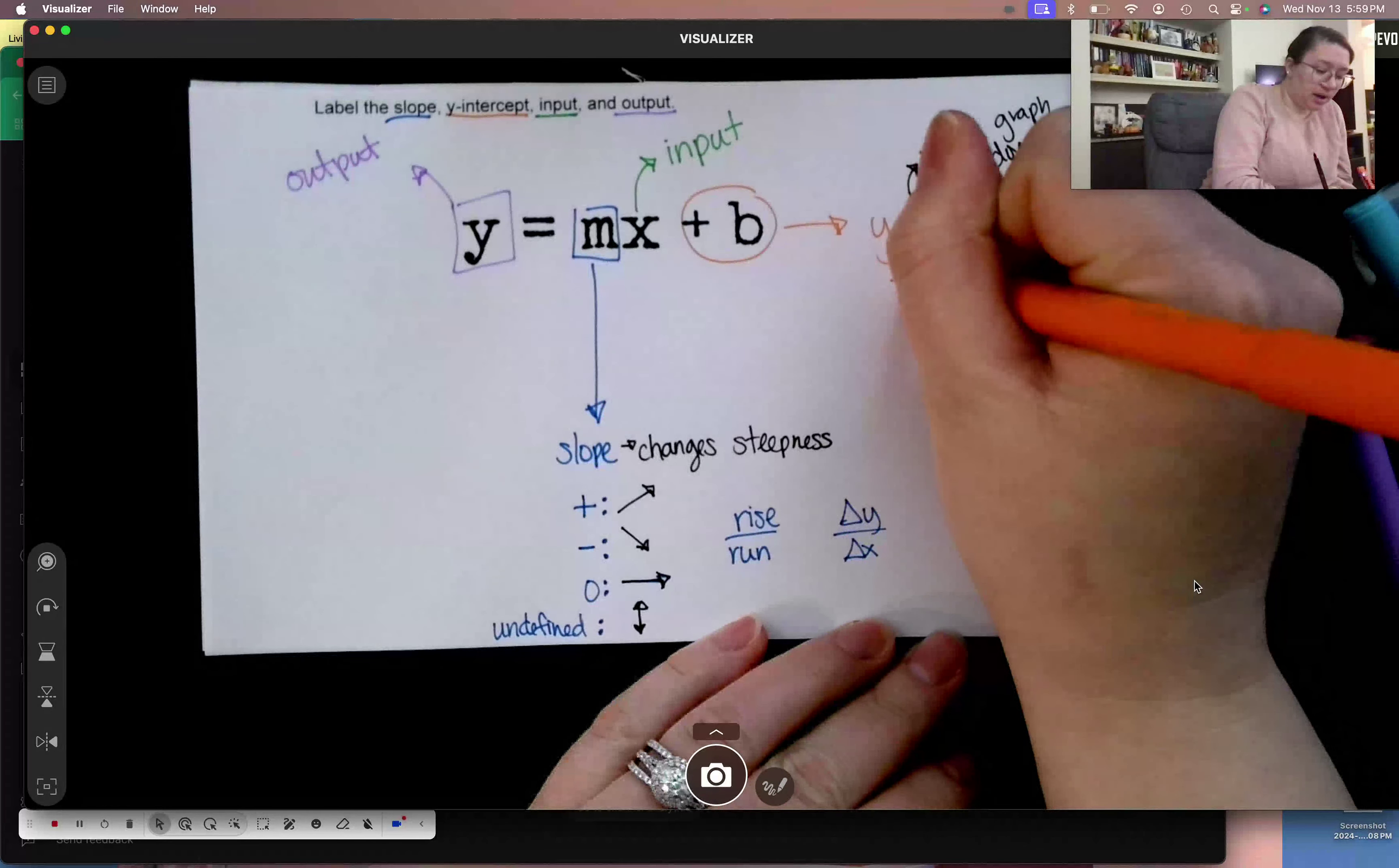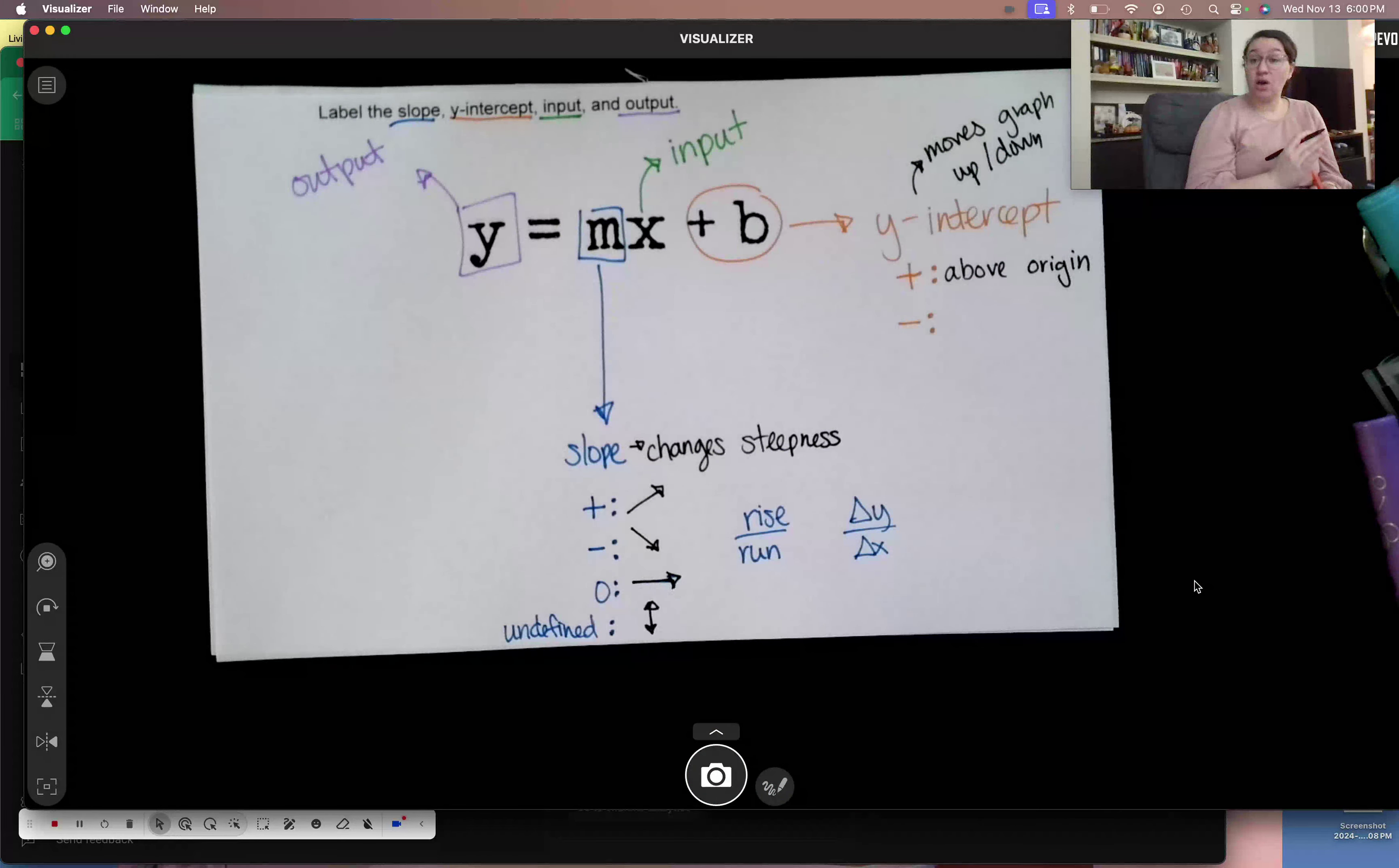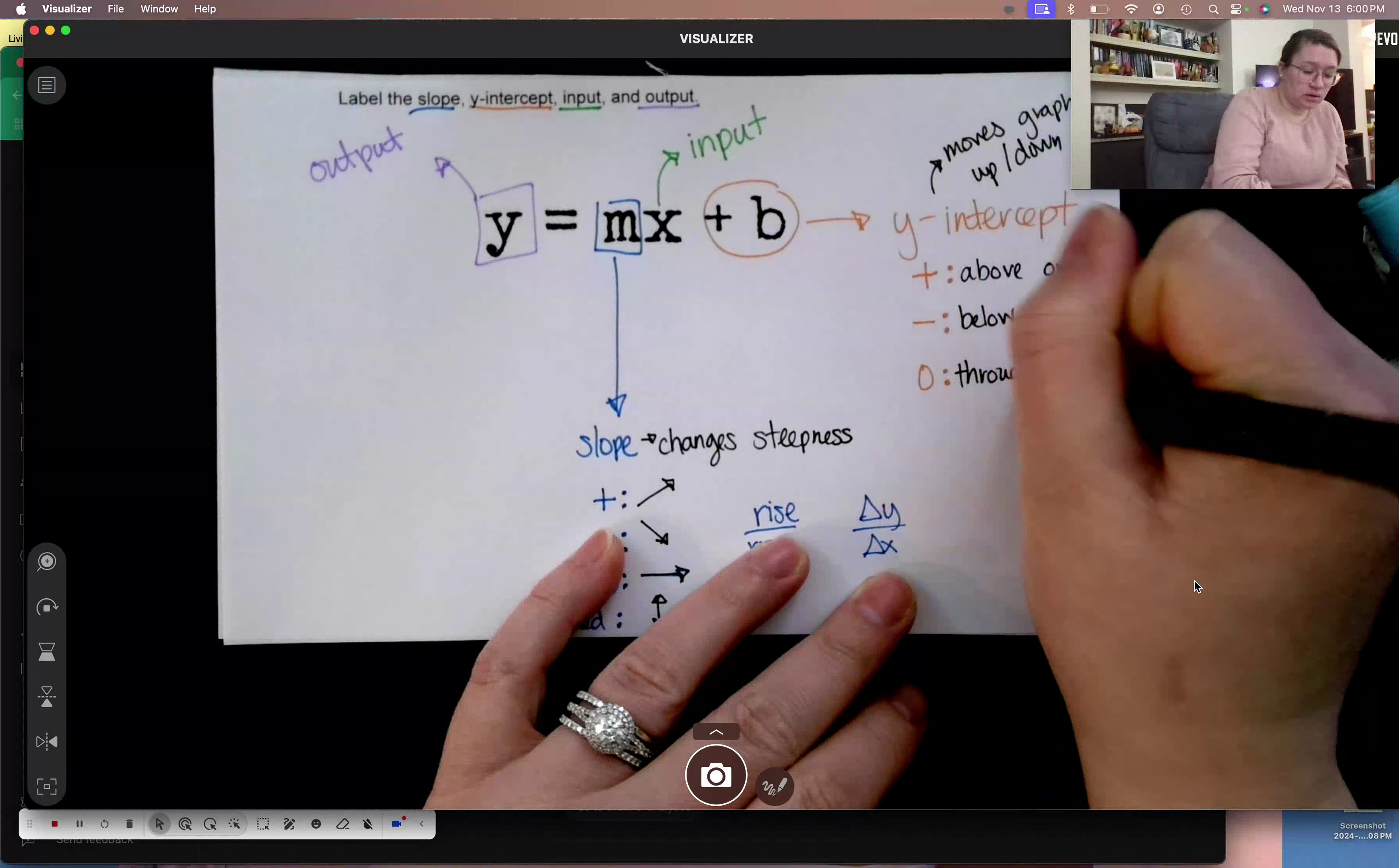If my y-intercept is positive, what does my y-intercept look like? It's above the origin. What if my y-intercept is negative? What would that look like? It's below the origin. And what if my y-intercept is zero? Or you don't see one, like a plus or minus anything at all. That means it's zero. That means it's going to go through the origin.